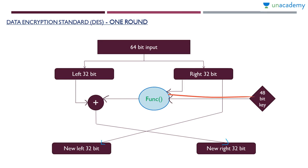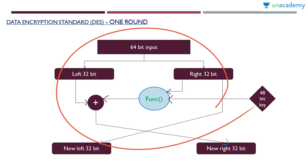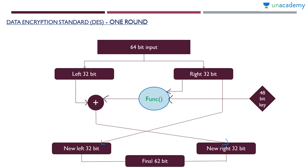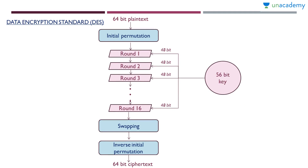This output and the left 32 bit will be XORed to give the new right 32 bit, and the right 32 bit becomes the new left 32 bit. That is what is happening inside a round. In the last 16th round, after the final swapping, the left 32 bit and right 32 bit will be joined to get the final 64 bit result. Then after the final left-right swapping, a permutation is done to get the final 64 bit ciphertext.